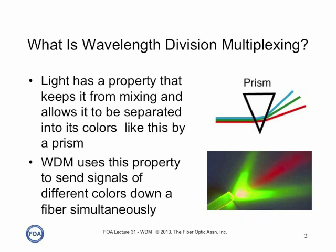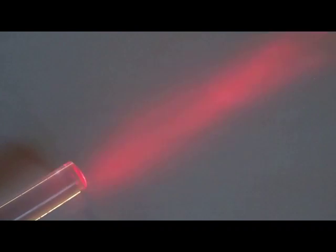So let's use a large core plastic fiber and some laser pointers to see exactly what's happening when wavelength division multiplexing is used. This is a large core plastic fiber, and we'll use a red laser pointer and we'll modulate it to show how signals are typically modulated in the optical fiber.